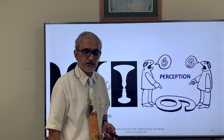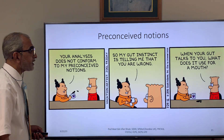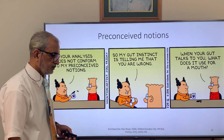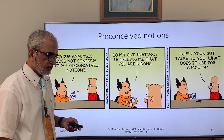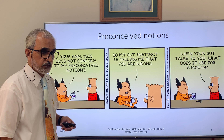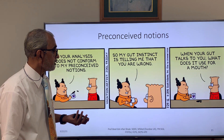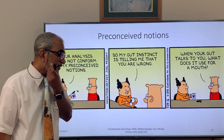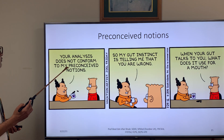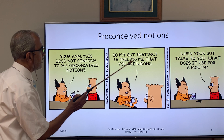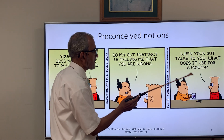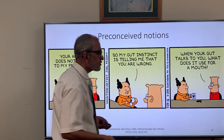Preconceived notions also affect concept formation. If somebody has the notion that 'one who talks must have a mouth,' then whenever the word 'talk' is used, they will associate it with a mouth — missing other meanings in different contexts. For example, the sentence 'your analysis does not conform to my gut instinct' leads to the comeback: 'When your gut talks to you, what does it use for a mouth?' — illustrating how preconceived notions create misconceptions.